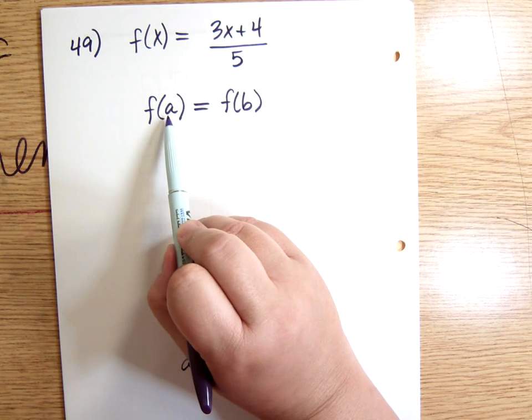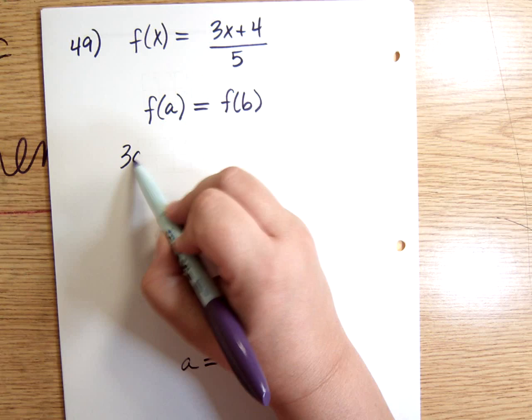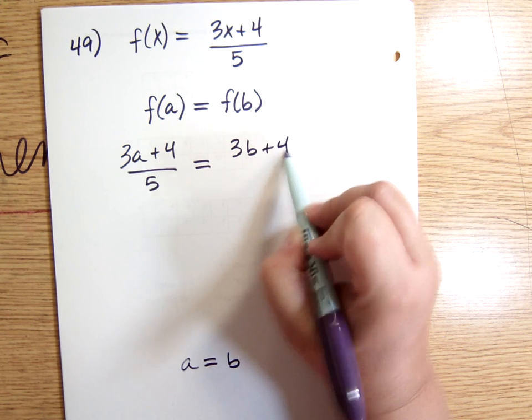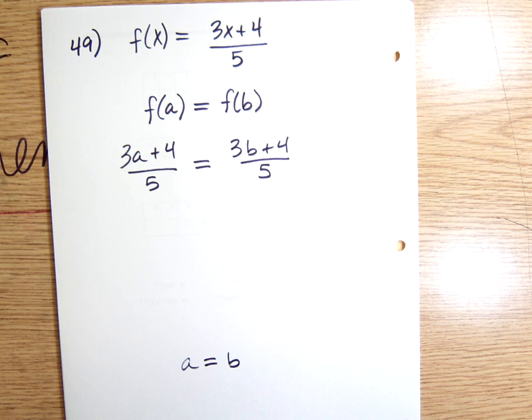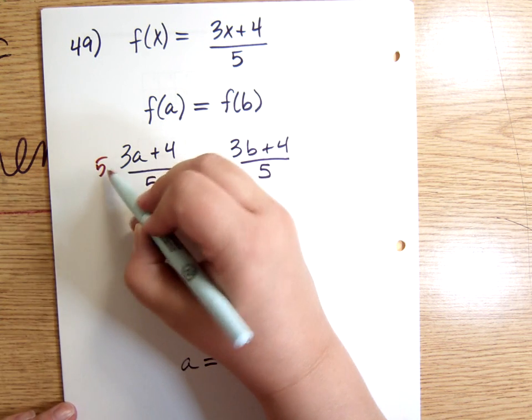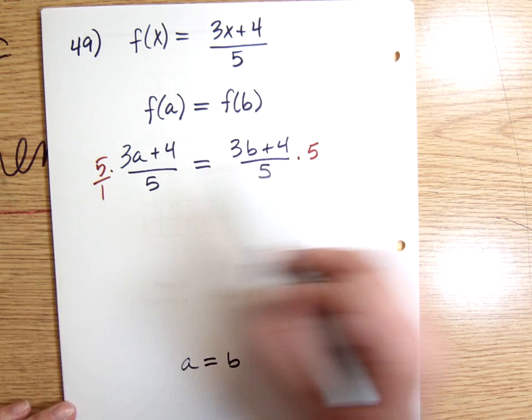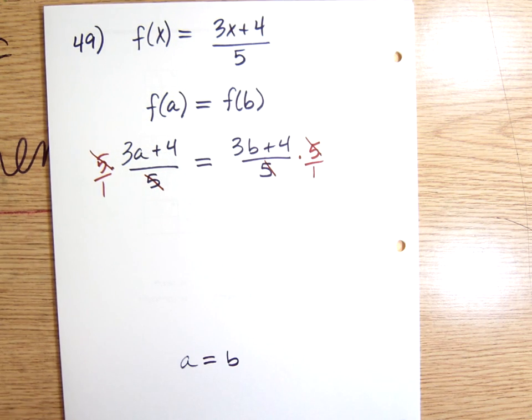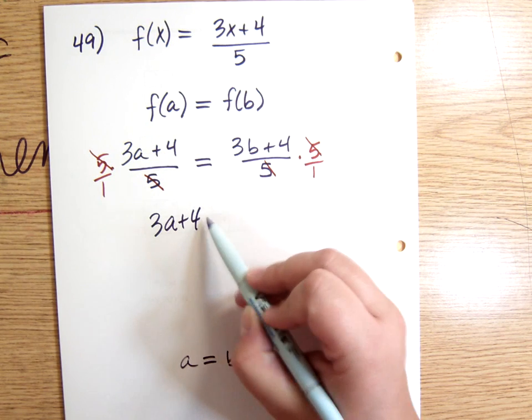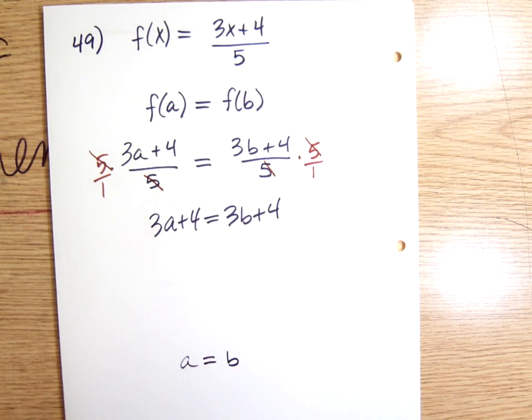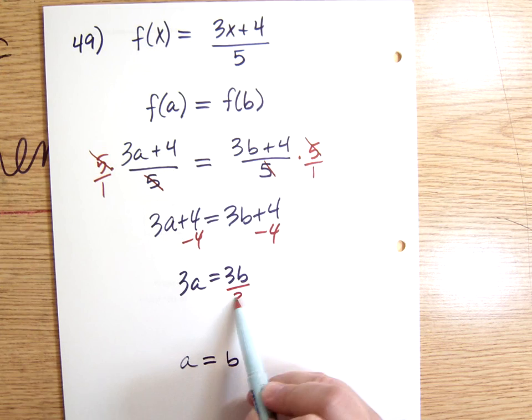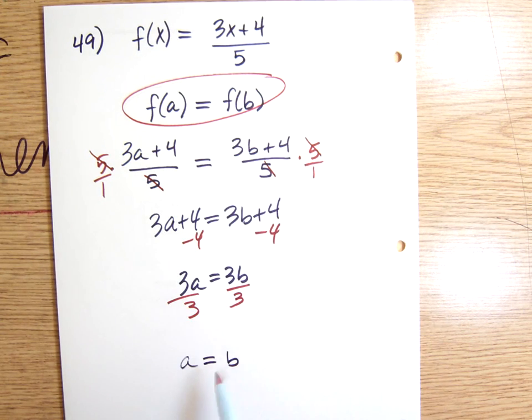Let's check it out. Let's plug in a into our f(x) function. We have (3a+4)/5 equals, plugging in b, (3b+4)/5. First thing I would do here is probably multiply both sides by 5. Times 5, times 5. Remember that's times 5/1, so that's really only being multiplied in the numerator and these cancel. So now I have 3a+4 equals 3b+4. We're on the right track, getting closer. Now I can subtract 4 from both sides, so minus 4 minus 4 gives me 3a equals 3b. And last but not least, I'm going to divide both sides by 3.